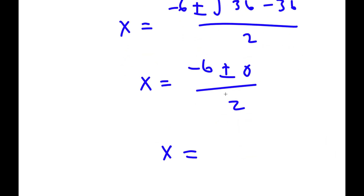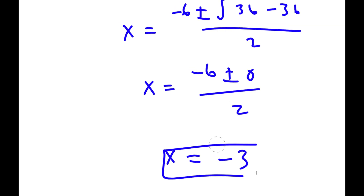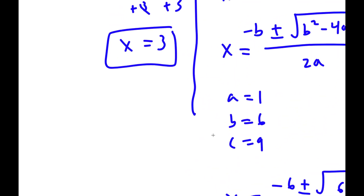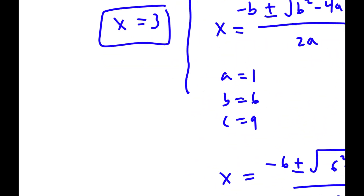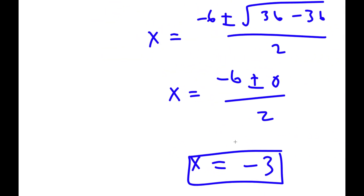If I simplify this, I get negative 6 over 2, which is negative 3. So my solutions are 3 and negative 3.